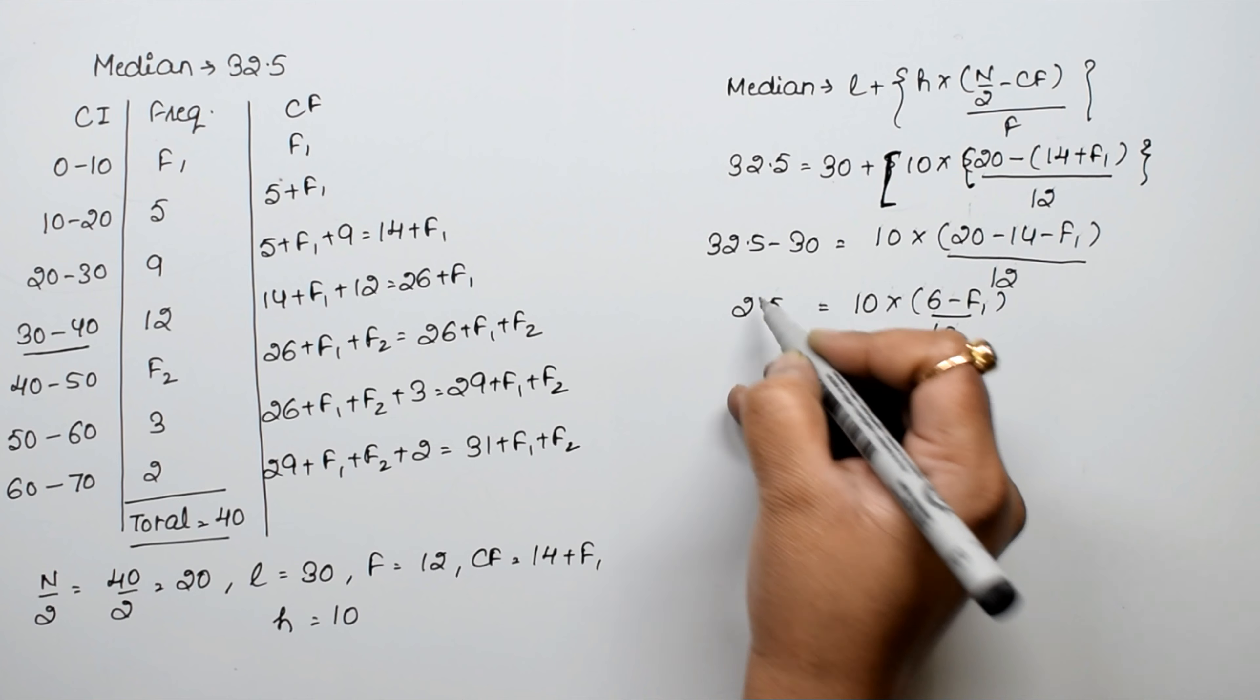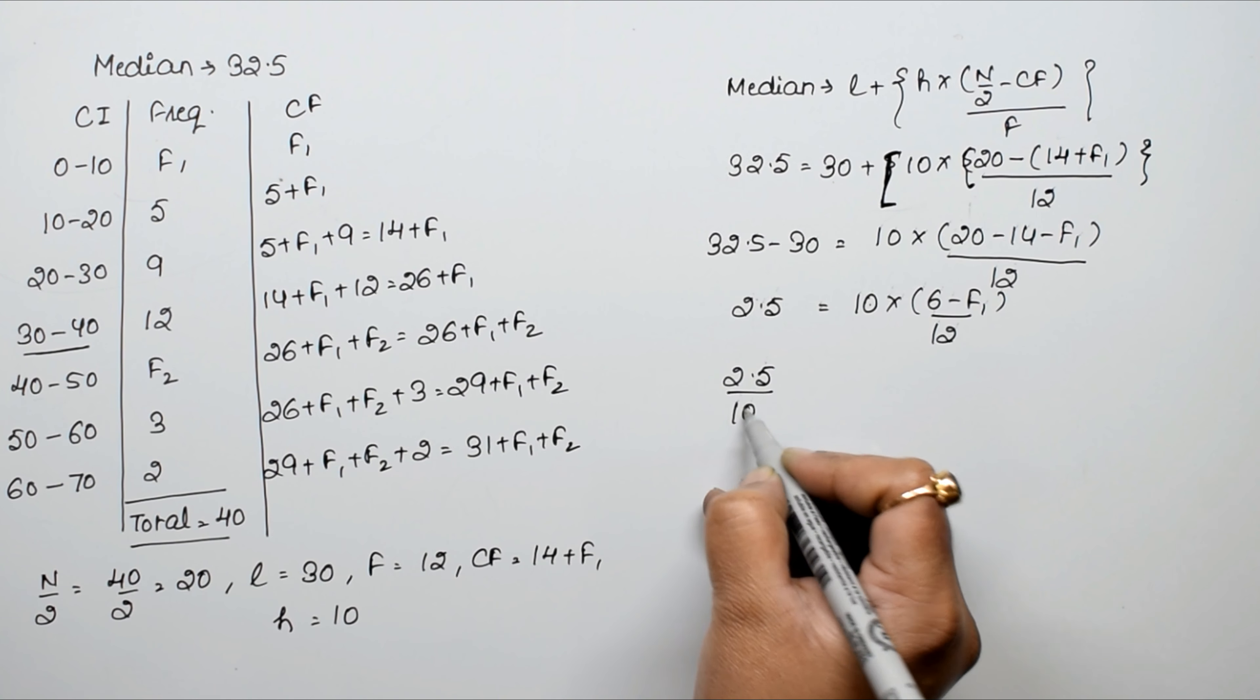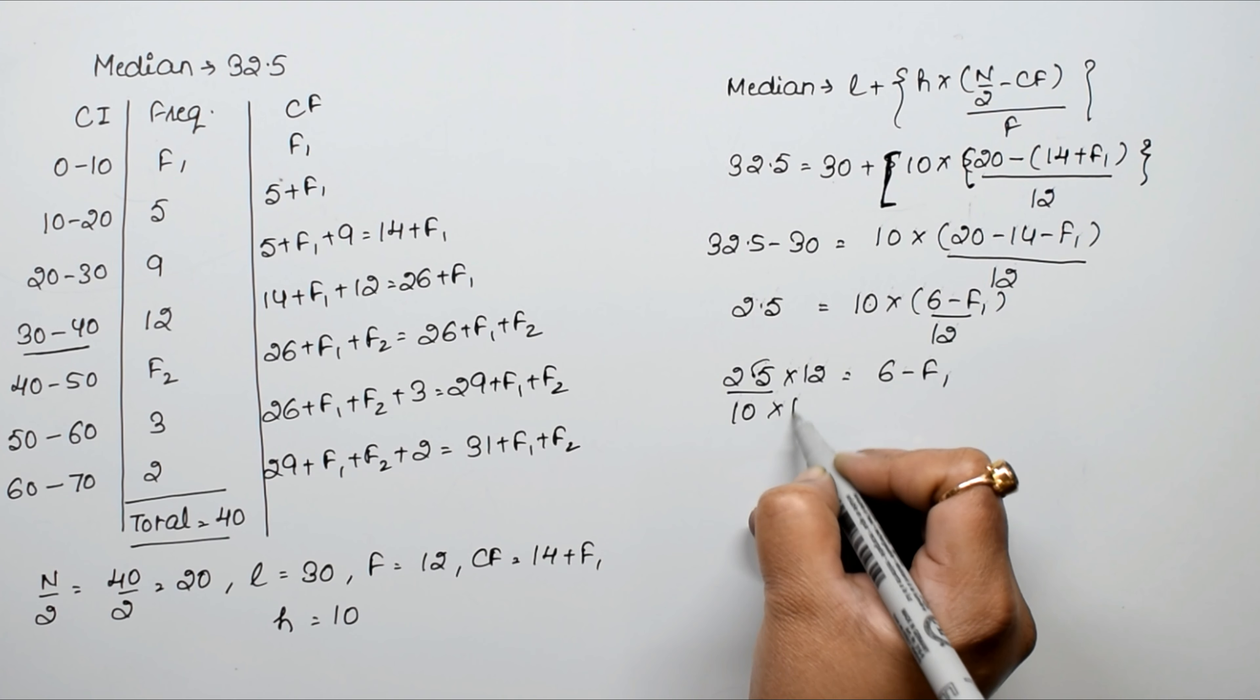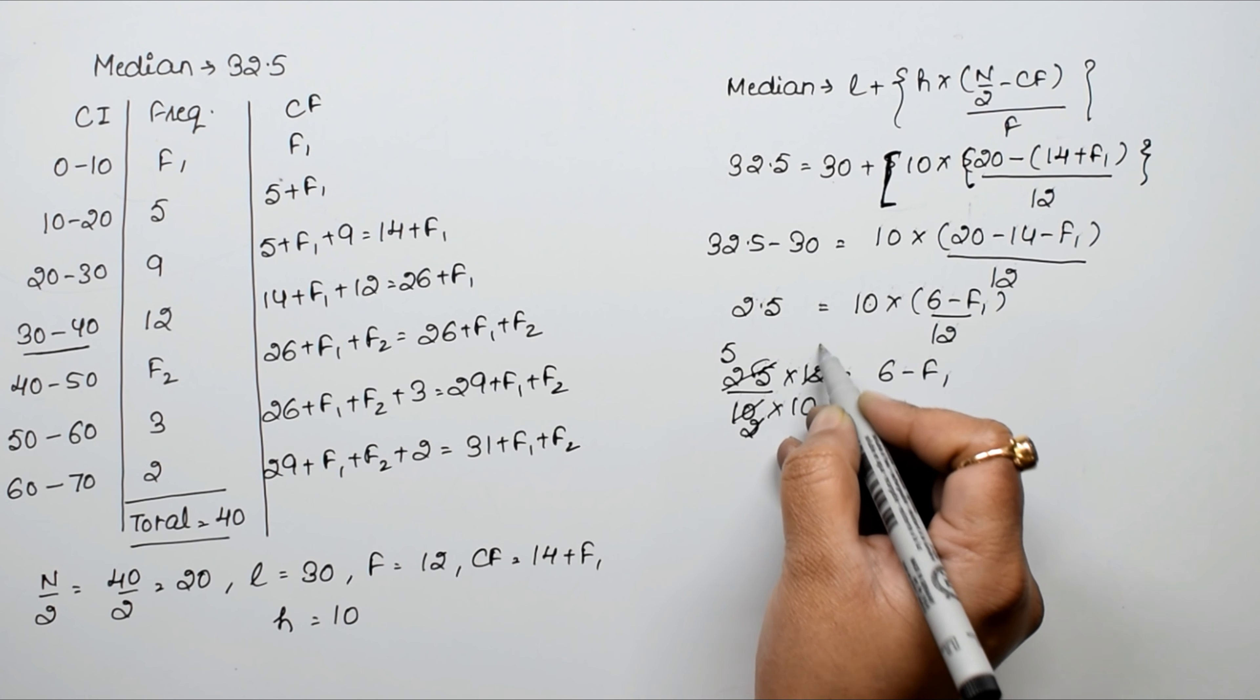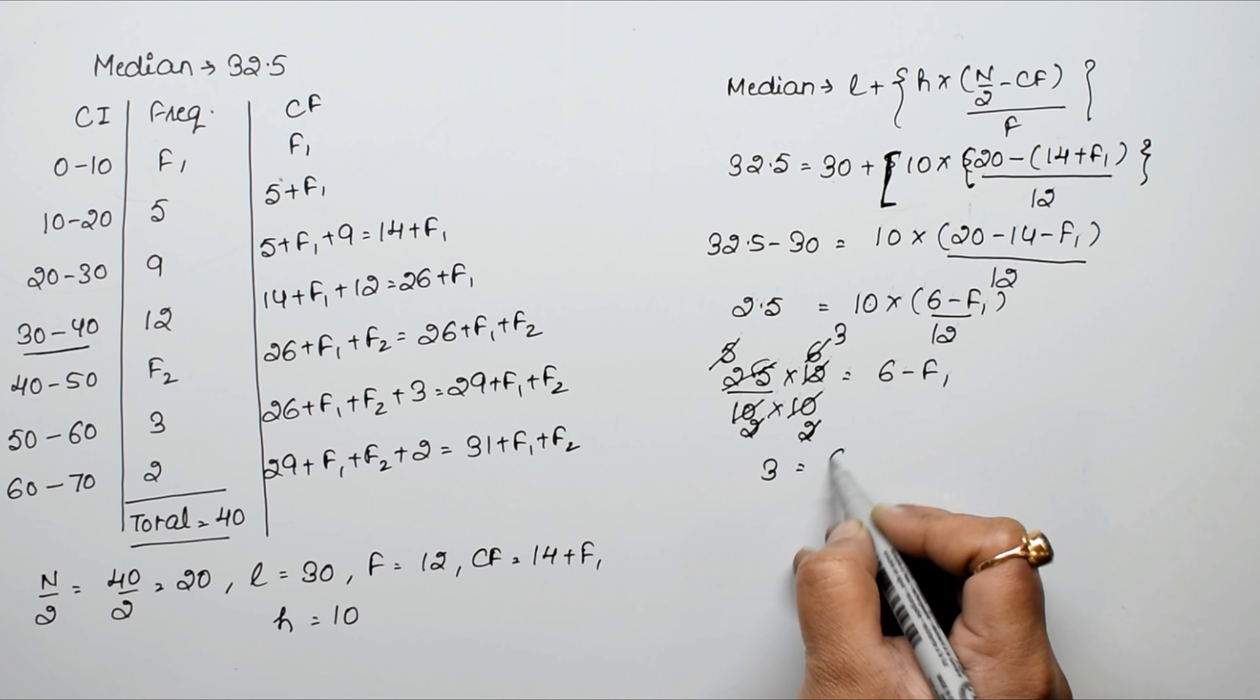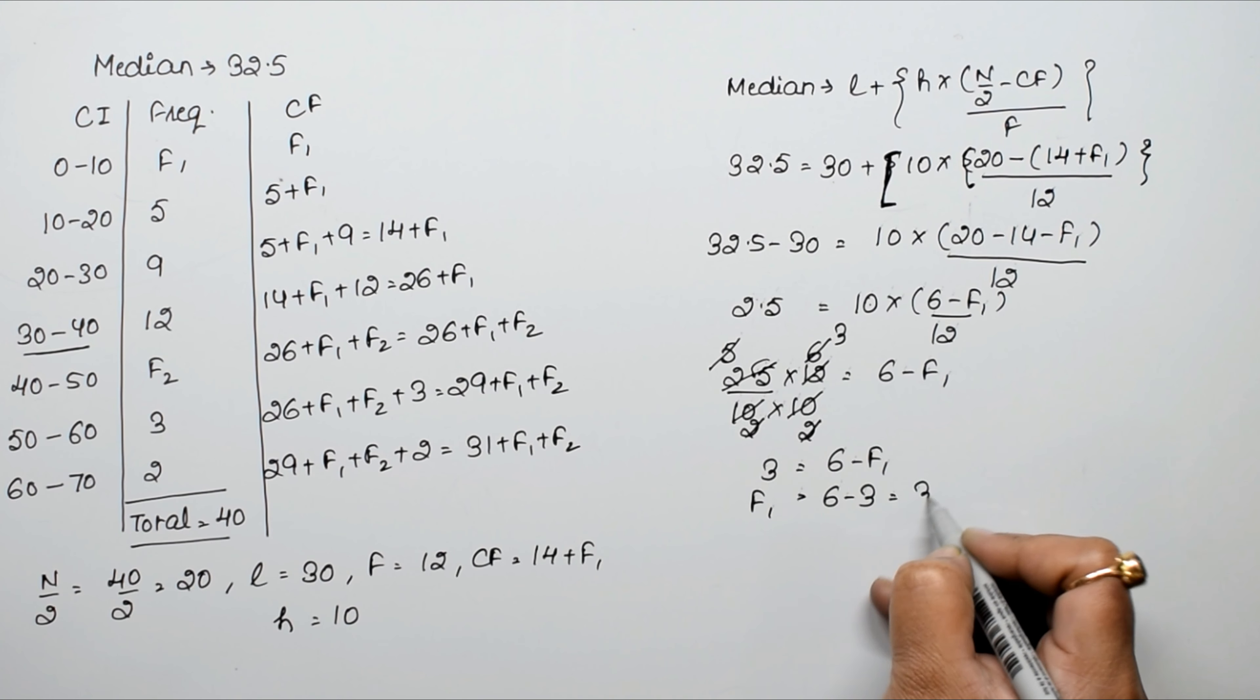So 2.5 upon 10 into 12 equals 6 minus F1. That gives us 3 equals 6 minus F1. Moving F1 to the other side: F1 equals 6 minus 3. So F1 equals 3.